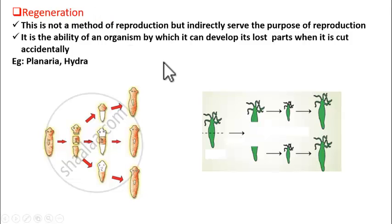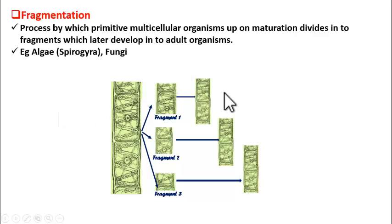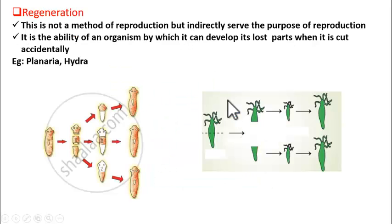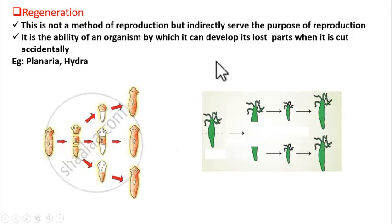To summarize: fragmentation is the purposeful breaking of primitive multicellular organisms that leads to reproduction, whereas regeneration is accidental breakage into bits that leads to reproduction. I hope you understood the difference between fragmentation and regeneration. Thank you.